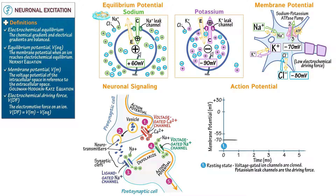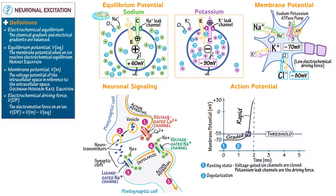Then at time one millisecond, via a graded depolarization, the membrane potential slowly becomes less negative. It depolarizes due to the opening of ligand-gated ion channels. Indicate that at negative 55 millivolts, the depolarization starts a steep climb, reflecting rapid depolarization. Mark this value as the threshold. Write that during depolarization, ligand-gated sodium channels open, followed by voltage-gated sodium channels, with rapid opening at threshold at negative 55 millivolts.